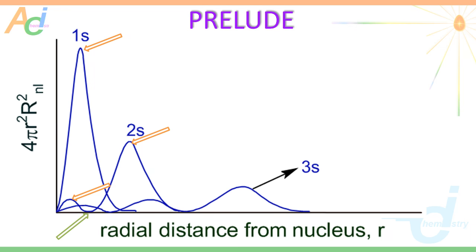And this is the curve for the 3s orbital. You can clearly see there are 3 peaks and 2 troughs, which means there are 2 radial nodes for the 3s orbital.